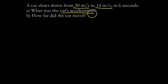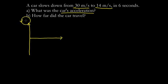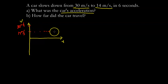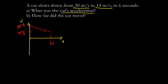Once again I'm going to draw my velocity versus time graph. In this problem we're slowing down from 30 to 14 meters per second, and this goes until 6 seconds. The graph is going to look something like this — it should be a straight line going downward.